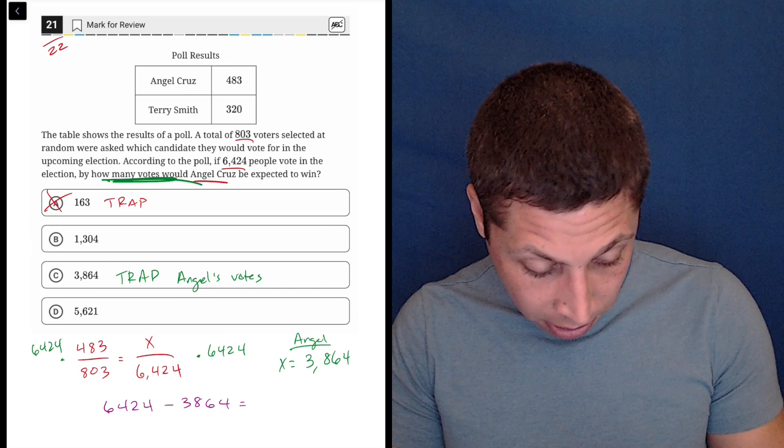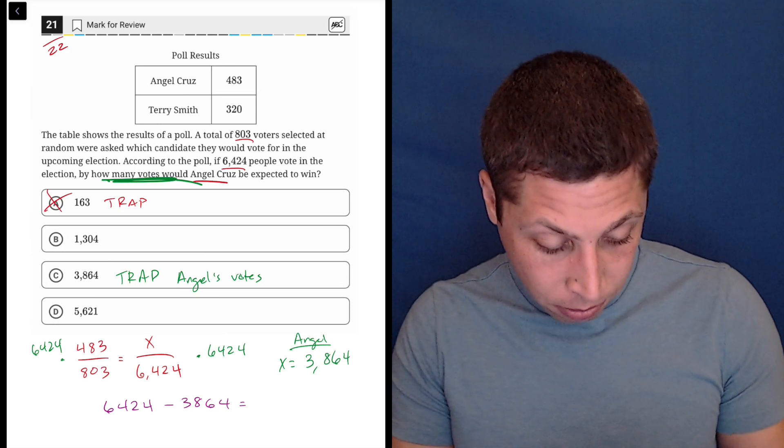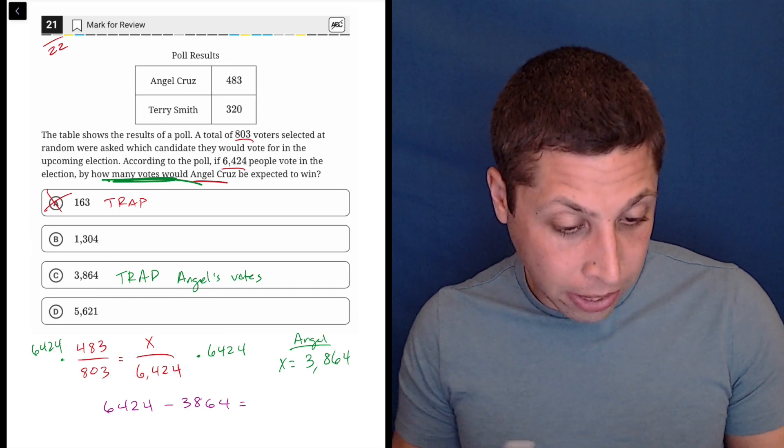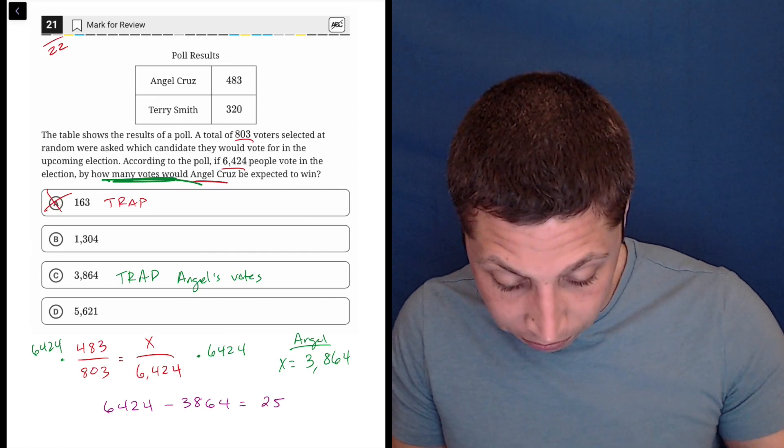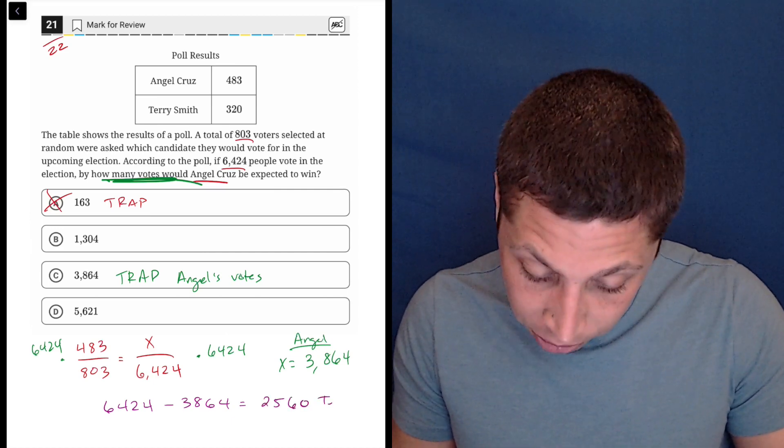So 6,424 minus 3,864, I'm very nervous about entering this stuff wrong, is 2,560 for Terry.